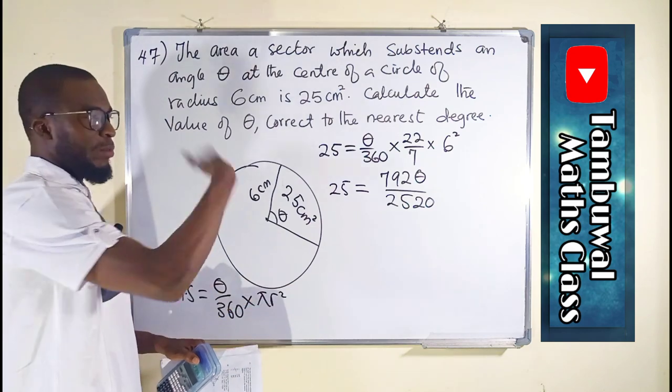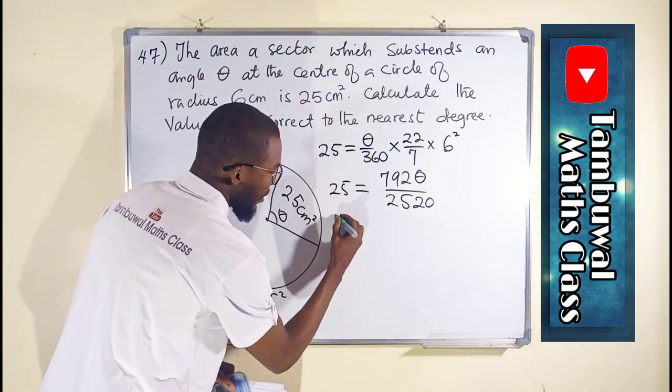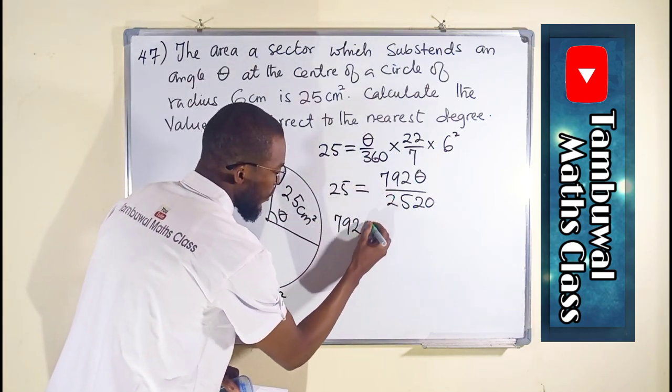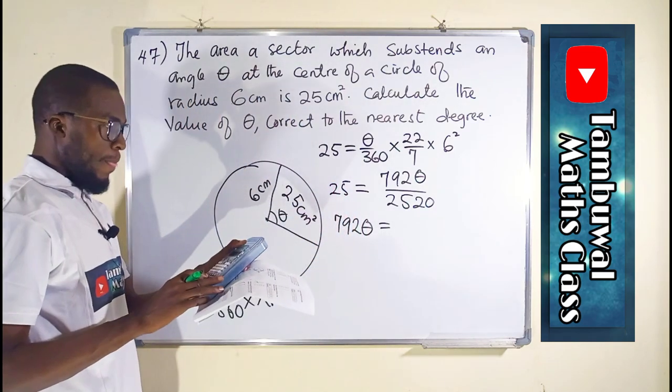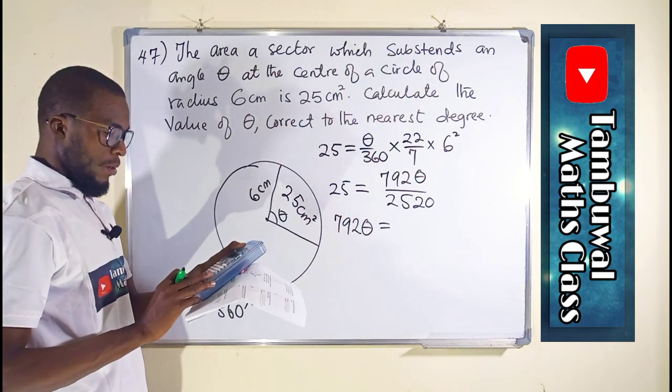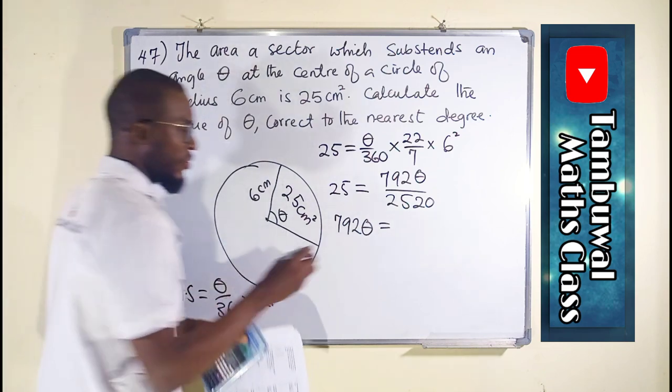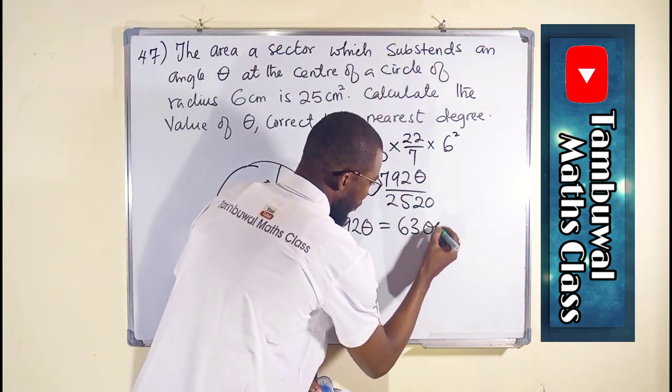So now we can cross multiply so that we have 792 theta to be equal to this times this. We have 63,000.